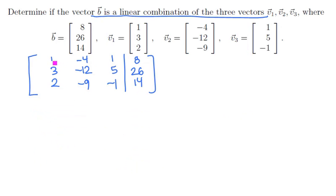So let's go and get zeros underneath that first pivot. If we multiply the first row through by -3, we'd have [-3, 12, -3, -24]. If we scale the first row by -2, we can remove the pivot down there. So we'd have [-2, 8, -2, -16].